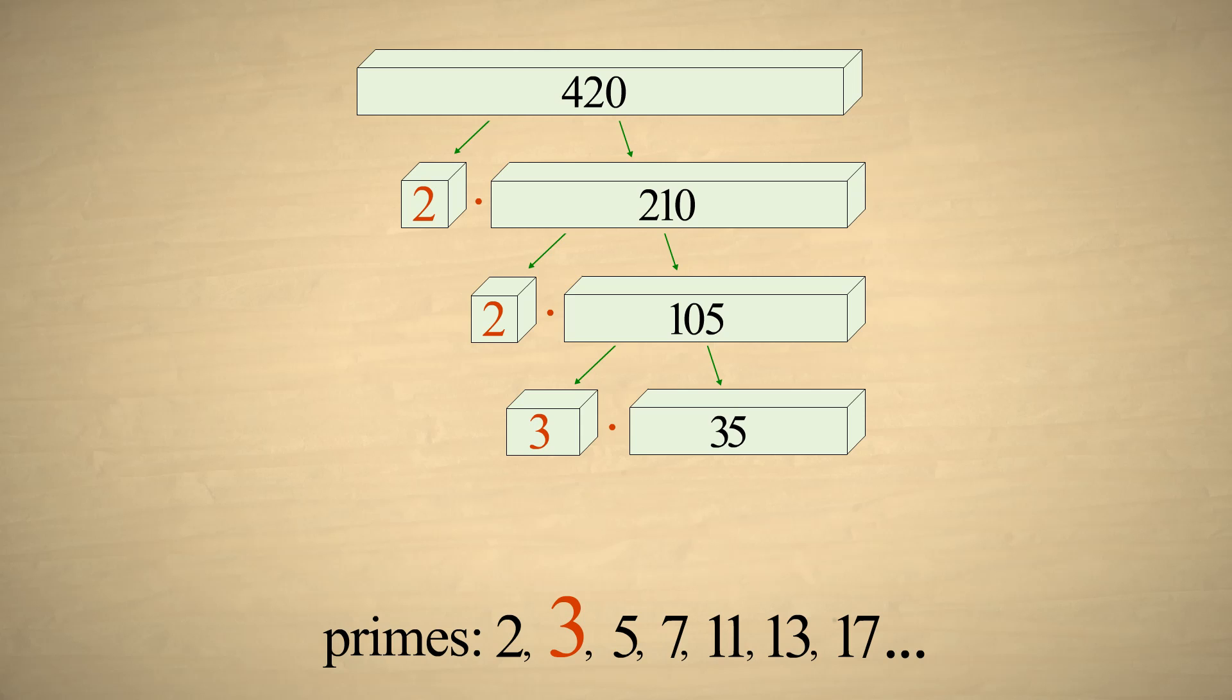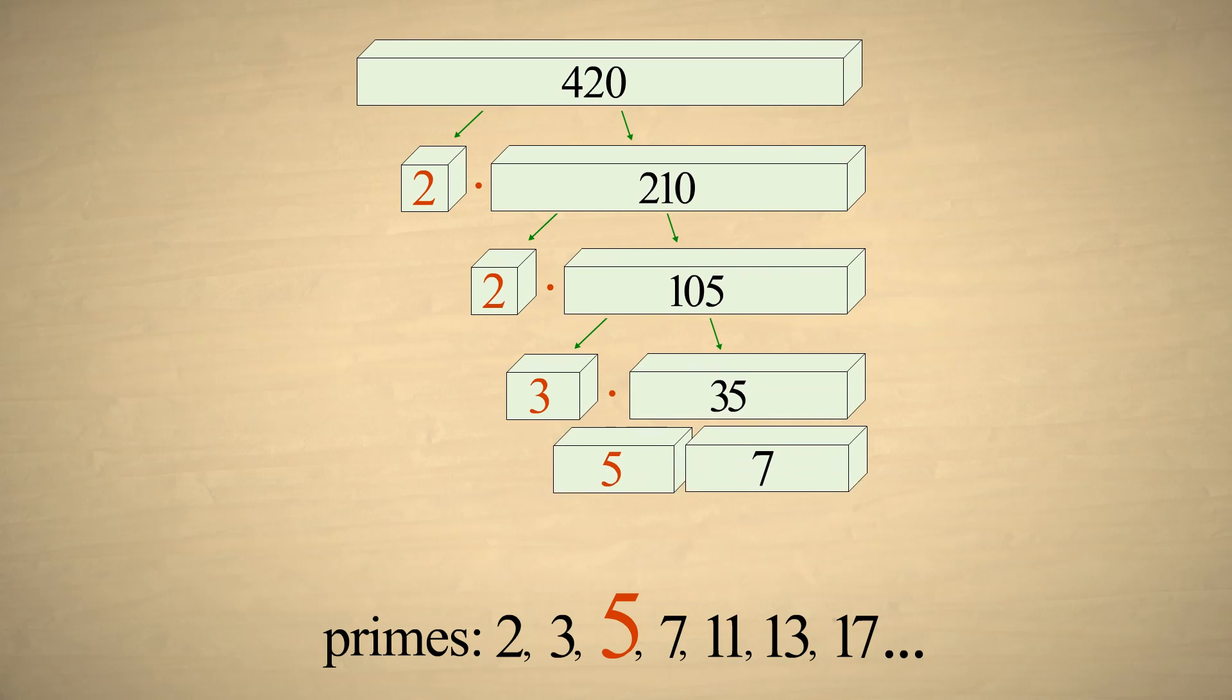We now have the factors 2 times 2 times 3 times 35. We must now determine if 35 is prime or composite. Since 35 is not divisible by 3, we test the next prime number, 5. 35 is divisible by 5, so 5 is a factor.